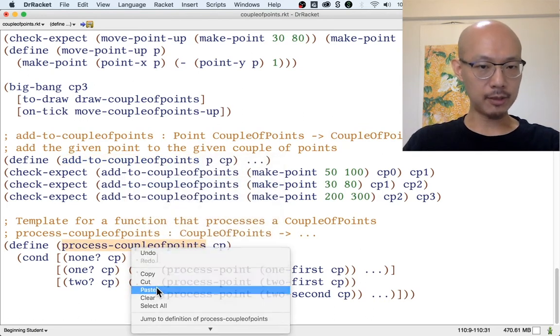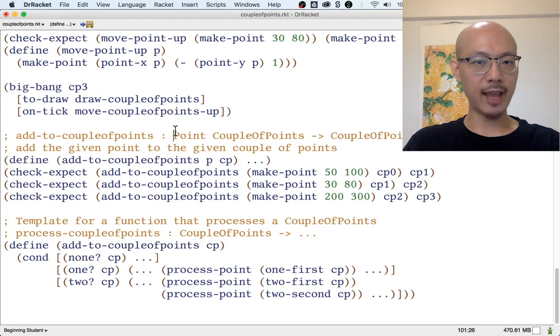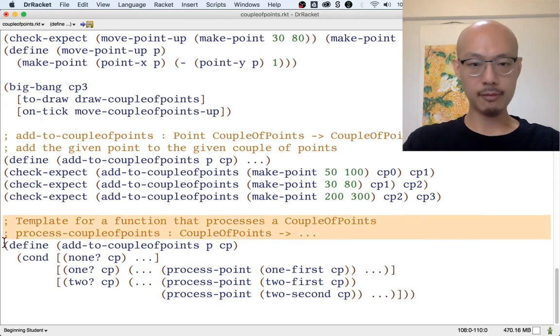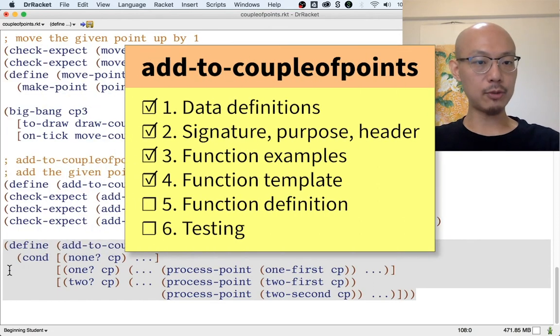And remember that because this function takes an extra point as input, we have to take that point and put it in the header. That point is along for the ride. Okay. And that's it. We're done with the template. Let's move on to step five, actually writing the definition.